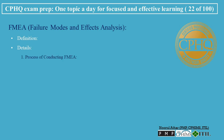Process of Conducting FMEA: The process begins by thoroughly documenting every step in the process being evaluated. For each step, potential failure modes are identified — these are the ways in which the process could fail. The impact of each potential failure on the rest of the process is analyzed and determined. Each identified failure mode is then scored based on three criteria.